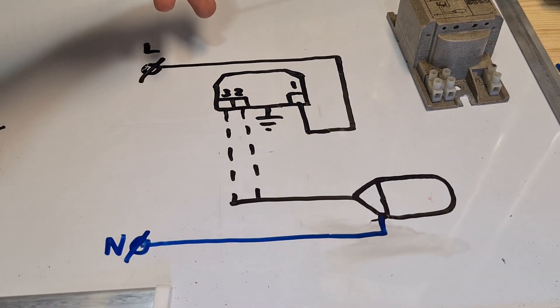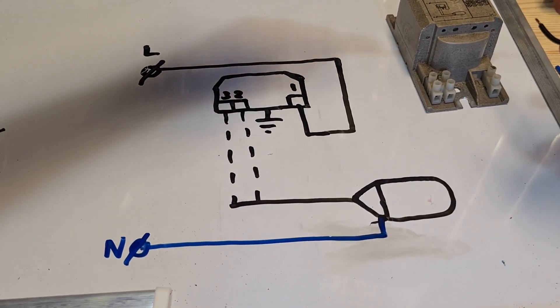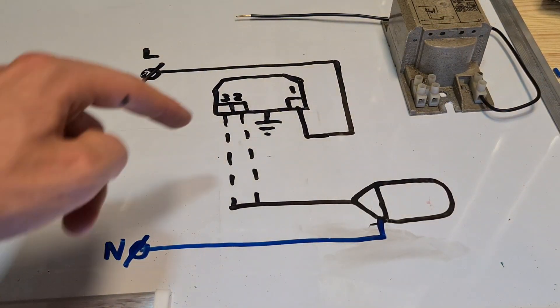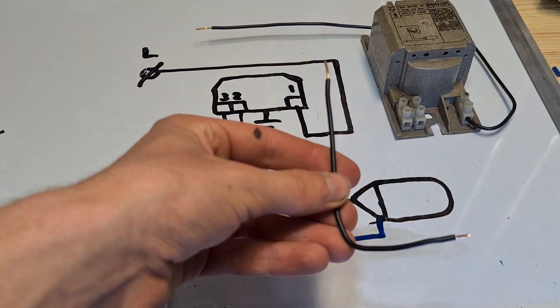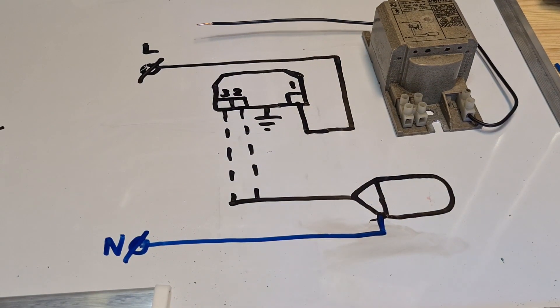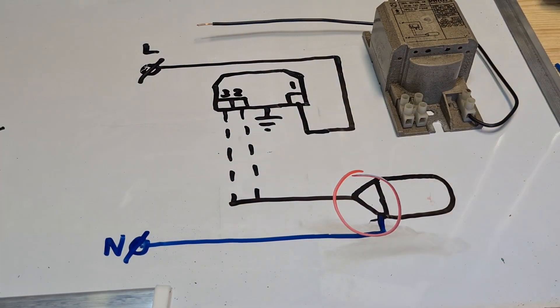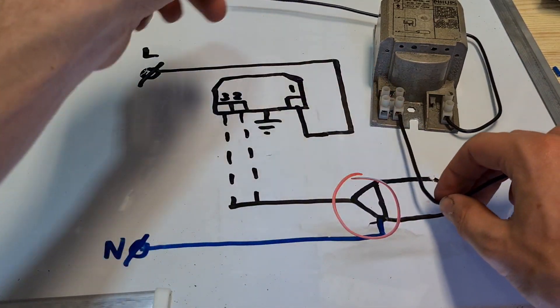We have this cable here, which again is the black one, the L. You put it in this one because this is contact one. Then you have a cable that goes to the socket. This here is the socket. Let's connect that here at contact two.